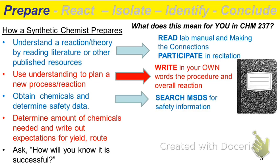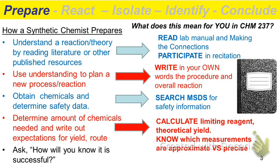The next part is determining the amount of chemicals and coming up with expectations — what would we expect as a yield at the end of the reaction? For you, this is very similar to a synthetic chemist: you're going to calculate your limiting reagents and your theoretical yield. We do this so we know what values are going to be really important, and we'll spend time to nail down the limiting reagent number accurately.